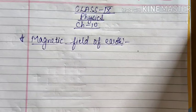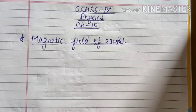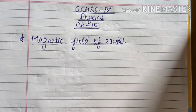Good evening everyone, it's Chandrakala. Today we will see the magnetic field of earth. As we have already discussed some properties of the magnet and induced magnetism, then we have seen magnetic field and magnetic field lines.